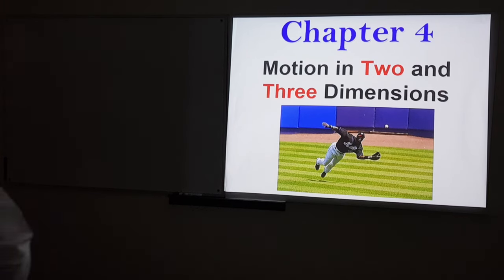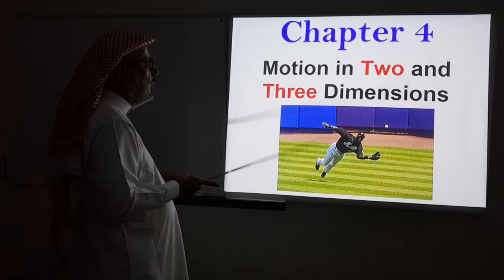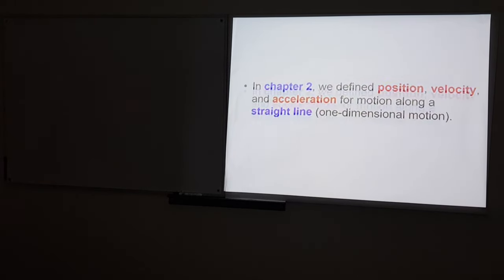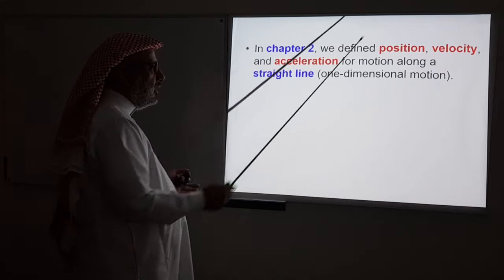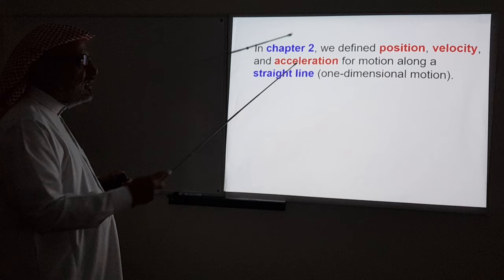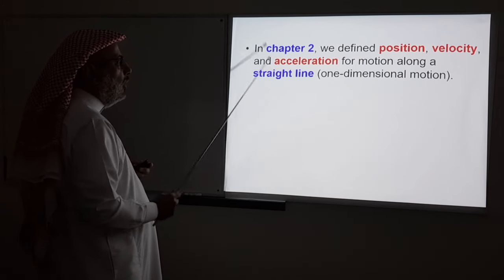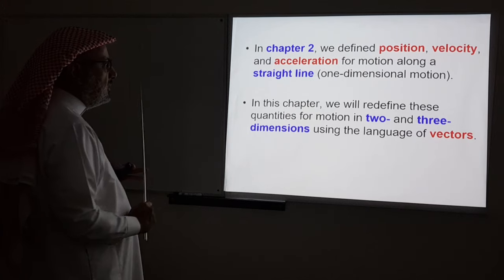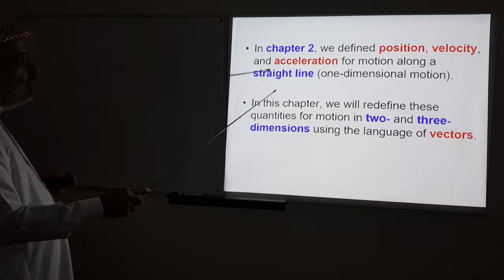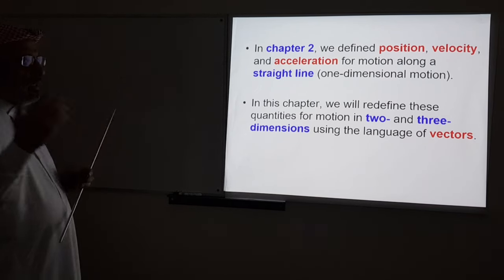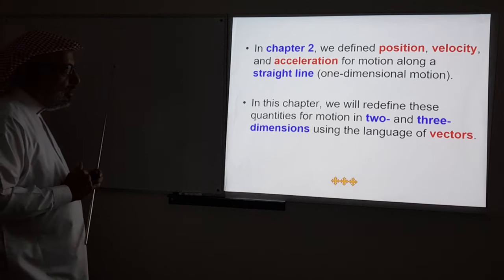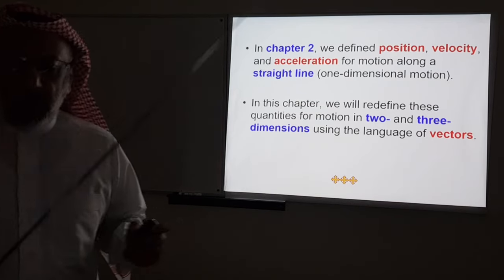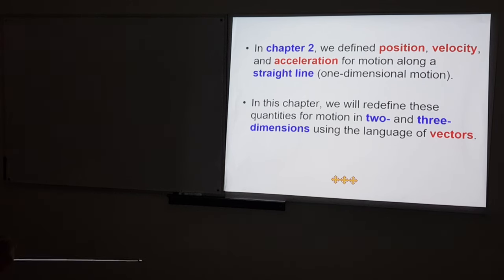Today we start with chapter four, which is about motion in two and three dimensions. In chapter two, we defined position, velocity, and acceleration — the three quantities used to describe motion — for motion along a straight line, or one-dimensional motion. In this chapter, we will redefine these quantities as they apply to motion in two and three dimensions using the language of vectors studied in the previous chapter. We will define position, velocity, and acceleration and lay down the necessary mathematics and equations.